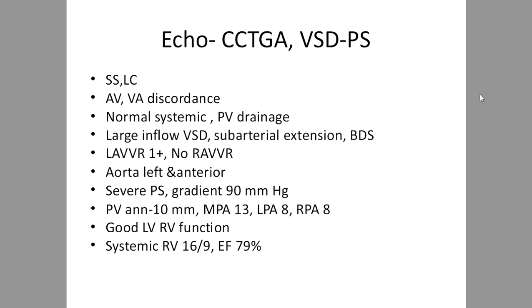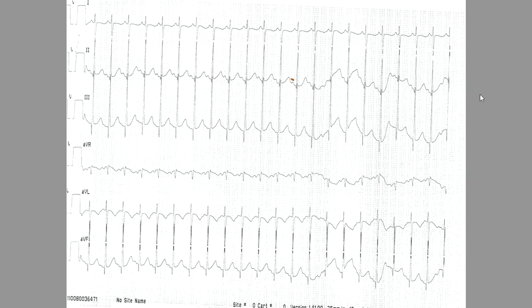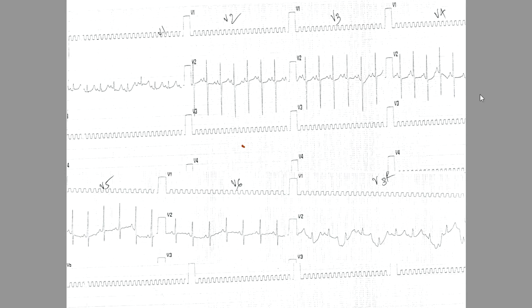A 6-month baby with failure to thrive and pansystolic murmur: unless you consider corrected TGA, you will miss it. Palpable left-posterior aorta is the first clinical clue; ECG shows deep Q-waves in lead III from right-to-left septal activation, and absence of Q-waves in lateral leads with or without Q-waves in V1. If mesocardia is present, mid-precordial leads show better forces while V1 and V6 are inconspicuous.